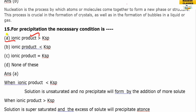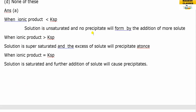For precipitation to occur, the ionic product of the salt must be greater than the solubility product. If the solution is unsaturated, no precipitate will form. When the ionic product equals Ksp, the solution is exactly saturated.